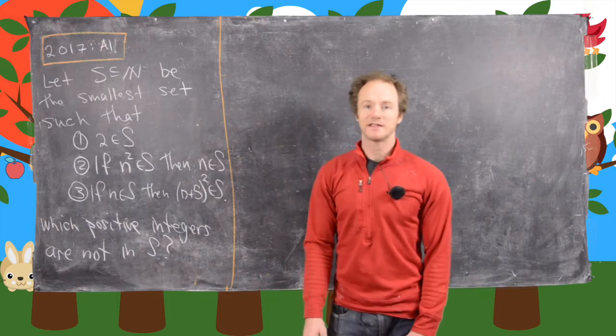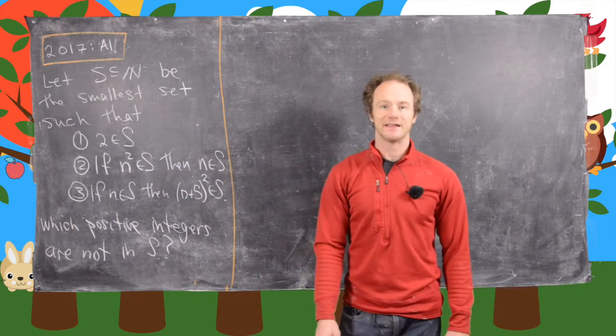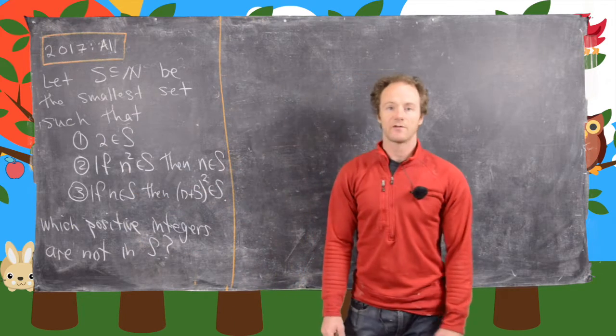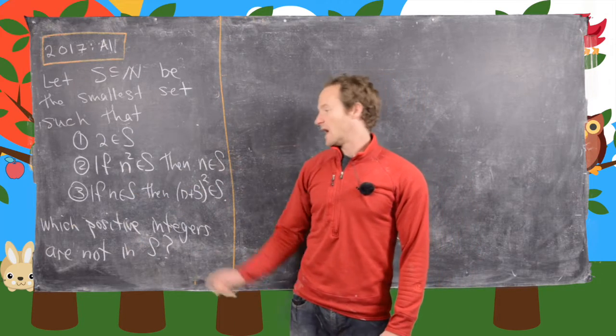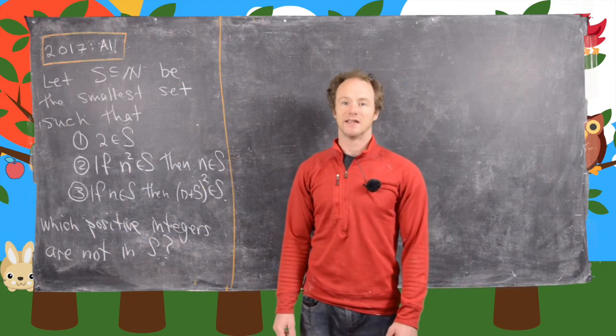So 2 is an element of S. If N squared is in S, then N is also in S. And then if N is in S, then N plus 5 quantity squared is in S. And now what we want to determine is which positive integers are not in S.